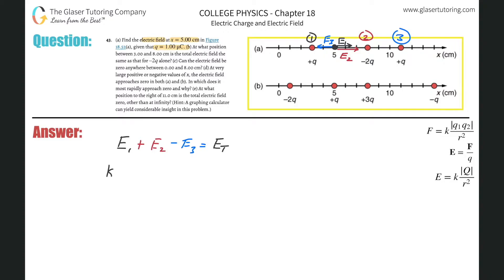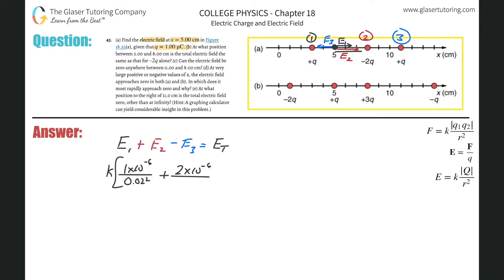Pulling out a common k, this becomes k times: q1 over r1 squared plus q2 over r2 squared minus q3 over r3 squared. Q1 is one microcoulomb (1×10⁻⁶ C) at 0.02 m; q2 is negative two microcoulombs so we use its magnitude, 2×10⁻⁶ C, at 0.03 m; and q3 is 1×10⁻⁶ C, six units away at 0.06 m.